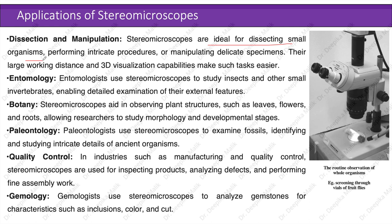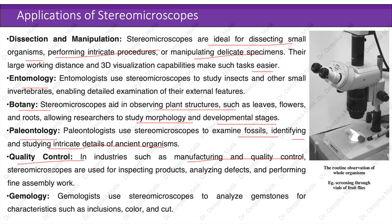Applications of stereo microscopes: dissection and manipulation — stereo microscopes are ideal for dissecting small organisms and performing intricate procedures on delicate specimens, with their large working distance and 3D visualization capabilities. In entomology, they enable detailed examination of insects and small invertebrates. In botany, they aid in observing plant structures such as leaves, flowers, and roots. Paleontologists use them to examine fossils for intricate details of ancient organisms. In manufacturing and quality control, they are used for inspecting products and performing fine assembly work. Gemmologists use them to analyze gemstones for inclusions, colors, and cut.